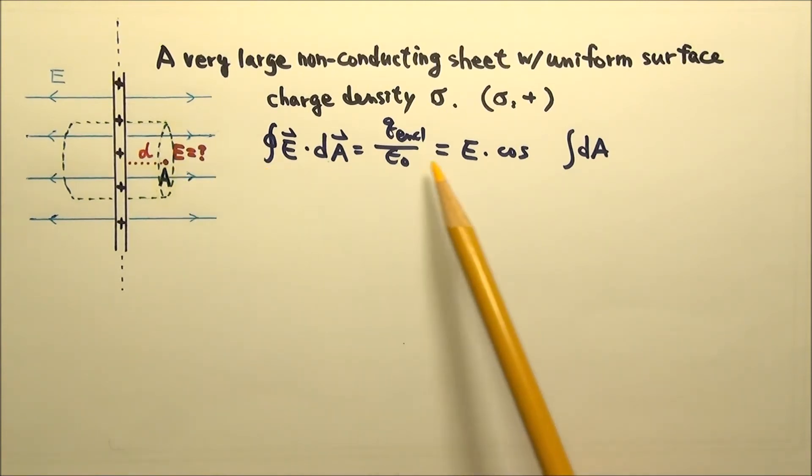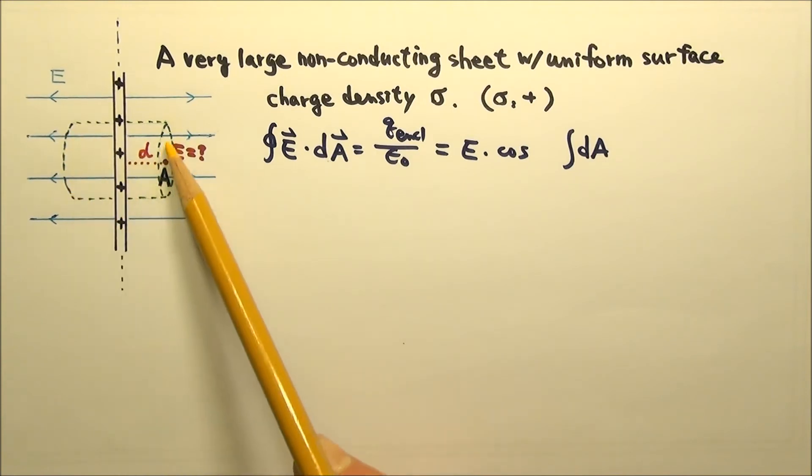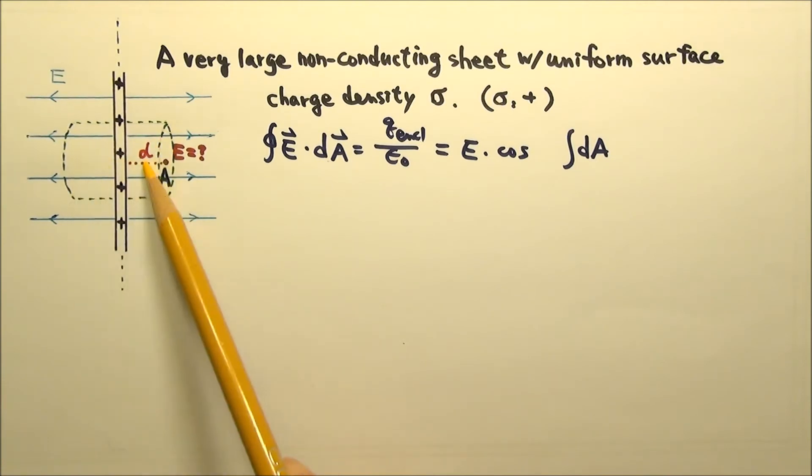When we look for flux, we can just focus on the part of the Gaussian surface that gives us a non-zero flux. The two ends of the cylinder have non-zero flux. There is no flux through the curved part of the cylinder, because no field lines go through this part.